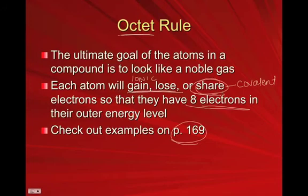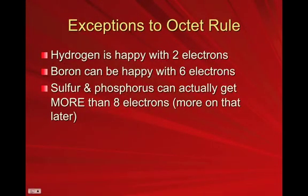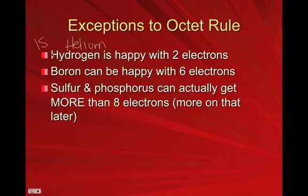We're specifically focusing on sharing today. Every element wants to satisfy the octet rule, except for the exceptions — because if we have a rule, we have to have exceptions. Hydrogen's closest noble gas is helium, which has two electrons, so hydrogen is happy with two electrons. Because hydrogen is a 1s element, it only has room for two electrons — like someone living in a downtown loft with no room for company.